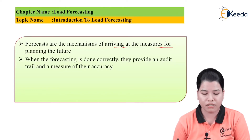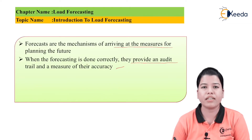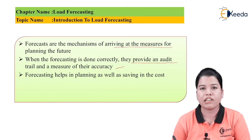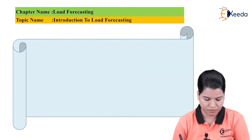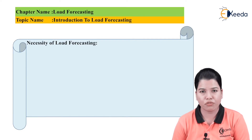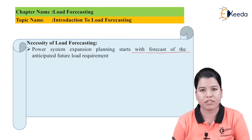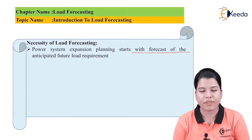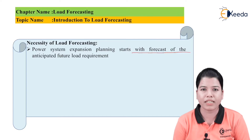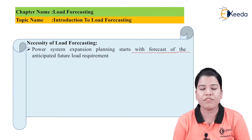When forecasting is done properly, it provides an audit trail and a measure of its accuracy. Forecasting also helps in planning as well as saving in cost. The power system expansion planning starts with the forecast of the anticipated future load requirement. For example, suppose a power station has a generating capacity of 500 megawatt; as the demand goes on increasing, there is a requirement to generate more and more energy. By doing proper forecasting, we can determine the future demand on the power system and accordingly the expansion of the generating station can be done.